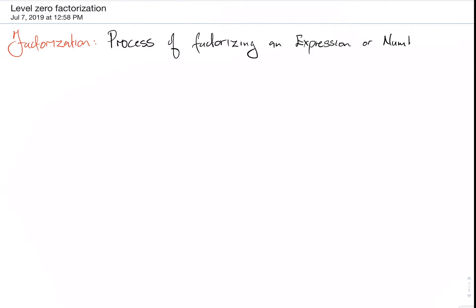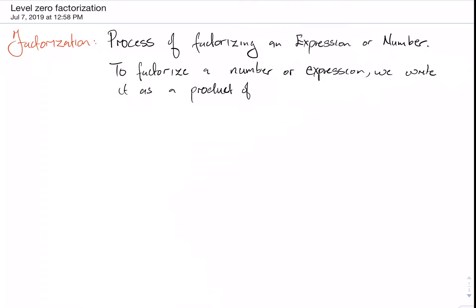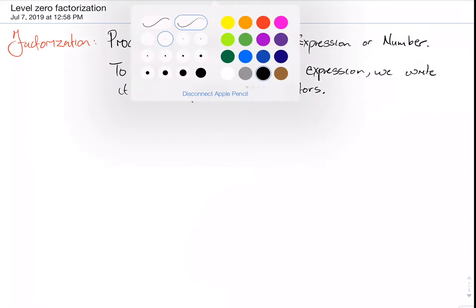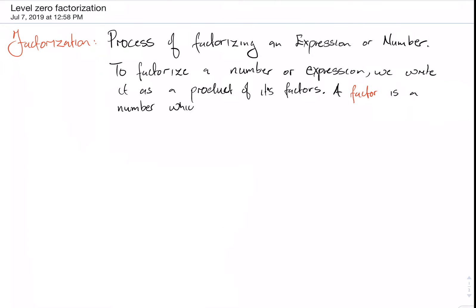We start by looking at the definition. Factorization is the process of factorizing an expression or number. To factorize a number or expression, we want to write it as a product of its factors. So we need to define what we mean by a factor.